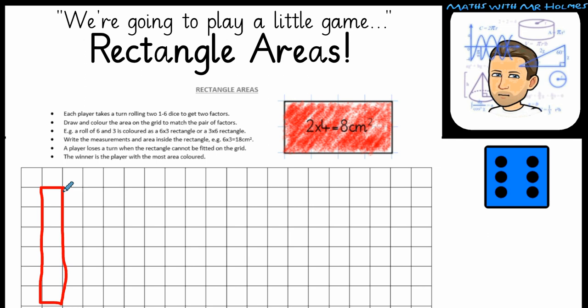It would be good, remember, to be accurate mathematicians to use a ruler. My next step is to write the measurements and the area inside the rectangle. So I did a 1, might have to write sideways here, a 1 by 6. Remember, when we're working out the area, we can use our times tables to help by doing the length times the width. So 1 times by 6 will give me 6.